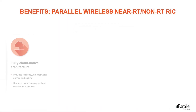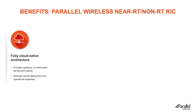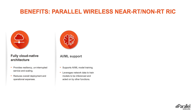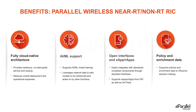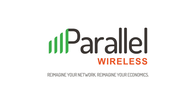To sum up: Parallel Wireless's fully cloud-native architecture provides resiliency, uninterrupted services, and scaling while reducing deployment and operational expenses. The Open RAN architecture including the RIC solution supports AI/ML model training by leveraging network data. Open interfaces coupled with RIC X-Apps and R-Apps easily integrate with standards-compliant components through standard interfaces, supporting apps from Parallel Wireless, third parties, and operators themselves. The solution also supports policy enrichment data to influence decision making. For more information, find us on LinkedIn, Twitter, Facebook, or at parallelwireless.com.